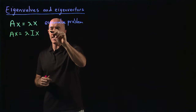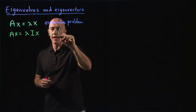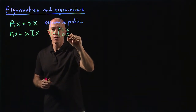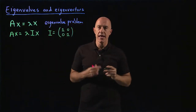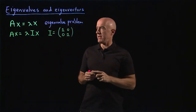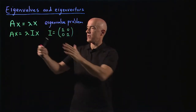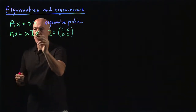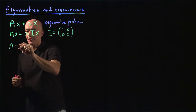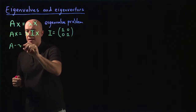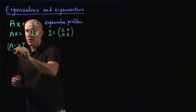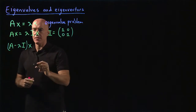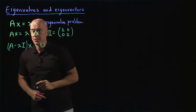You write this as Ax equals lambda and then introduce the identity matrix I in front of x. In the 2×2 case, I is just 1, 0, 0, 1, so I times x is just x. You can then manipulate this expression and end up with A minus lambda I times x equals zero.